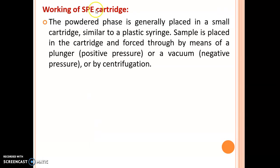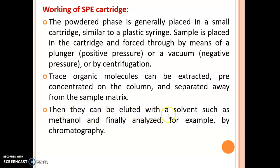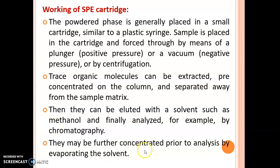Now let us see the working of SPE cartridges. The powdered phase is generally placed in a small cartridge similar to a plastic syringe. The sample is placed in the cartridge and forced through by means of a plunger using positive pressure, or by vacuum (negative pressure), or by centrifugation. Trace organic molecules can be extracted and pre-concentrated on the column, separated away from the sample matrix, then eluted with a solvent such as methanol, and finally analyzed by chromatography. They may be further concentrated prior to analysis by evaporating the solvent.